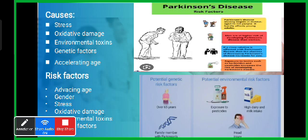Oxidative damage occurs when neurons present in the substantia nigra face insufficient oxygen supply, causing the neurons to die. Environmental toxins such as allergens, pesticides, and herbicides are also causes. Regarding genetic factors, if anyone in a close relative has Parkinson's disease, there are greater chances of it being passed on.